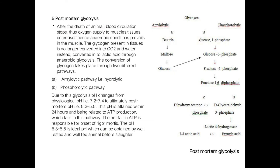Regarding post-mortem glycolysis: before death, glycogen is converted into carbon dioxide and expelled. After death, glycogen is converted into lactic acid. After the death of animals, blood circulation stops, oxygen supply to muscle tissues decreases, and anaerobic conditions prevail in the muscle. The glycogen present in tissue is no longer converted into carbon dioxide and water; instead it is converted into lactic acid through anaerobic glycolysis. This conversion takes place through the amylolytic pathway and the phosphorylytic pathway.